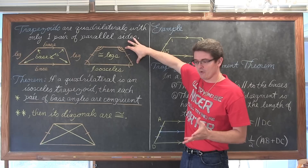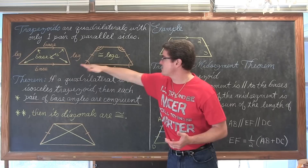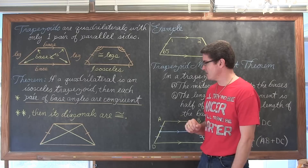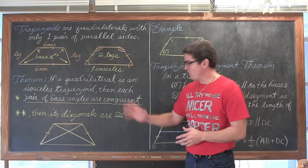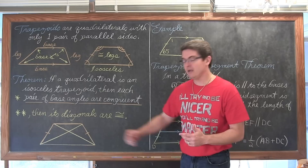The consecutive angles along each of the legs are supplementary. The bottom base angles are congruent and the top base angles are congruent. Also, the diagonals of an isosceles trapezoid are congruent themselves. If you draw a diagonal going to each of the opposite vertices, those lengths are going to be equal.